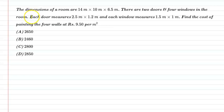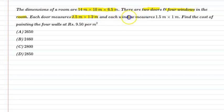Hello students, let us understand the following question. The dimensions of a room are 14 meter × 10 meter × 6.5 meter. There are two doors and four windows in the room. Each door measures 2.5 meter × 1.2 meter and each window measures 1.5 meter × 1 meter. Find the cost of painting the 4 walls at rupees 9.50 per meter square.